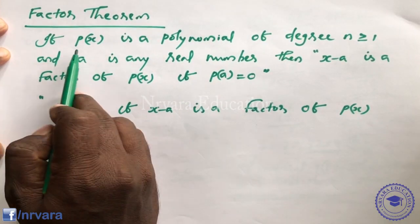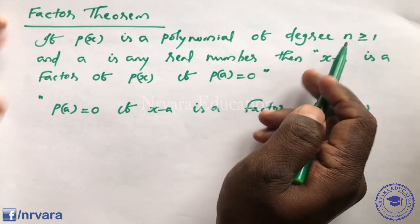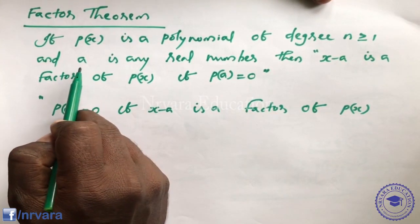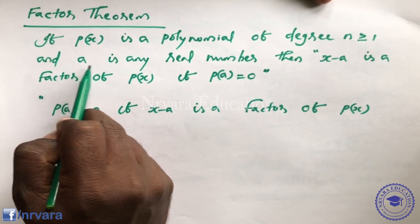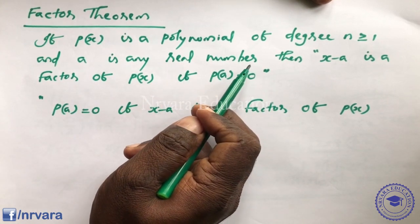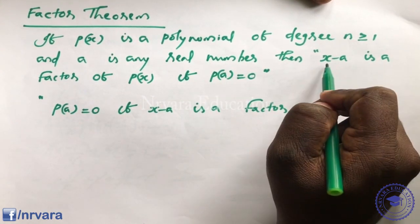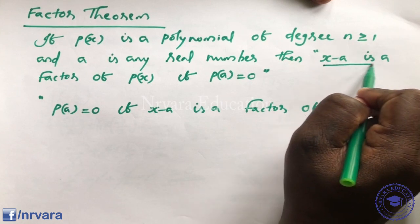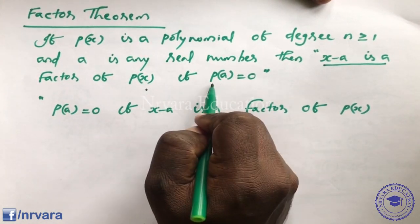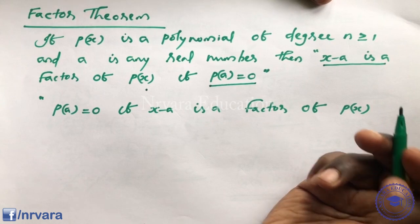Factor Theorem: If p(x) is a polynomial of degree greater than 1 and if 'a' is any real number, then (x - a) is a factor of p(x) if and only if p(a) = 0.